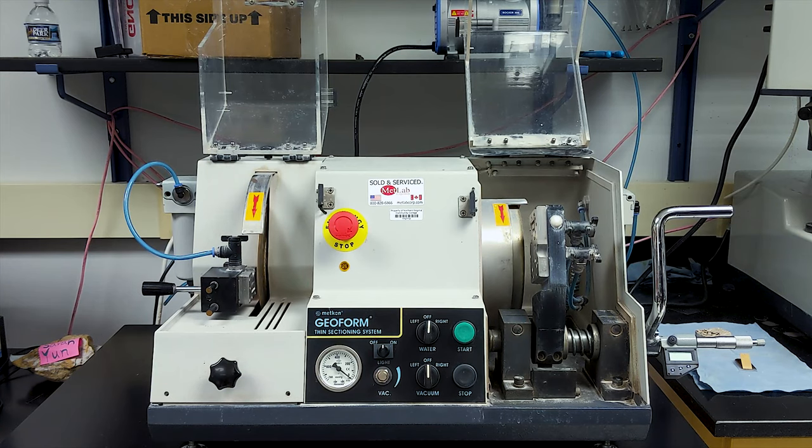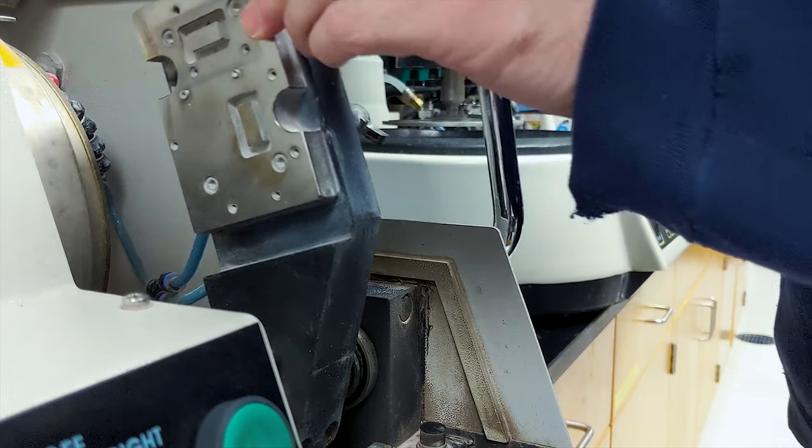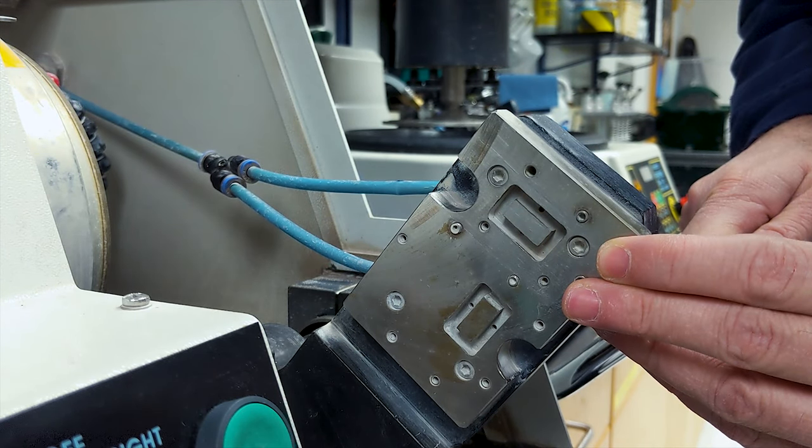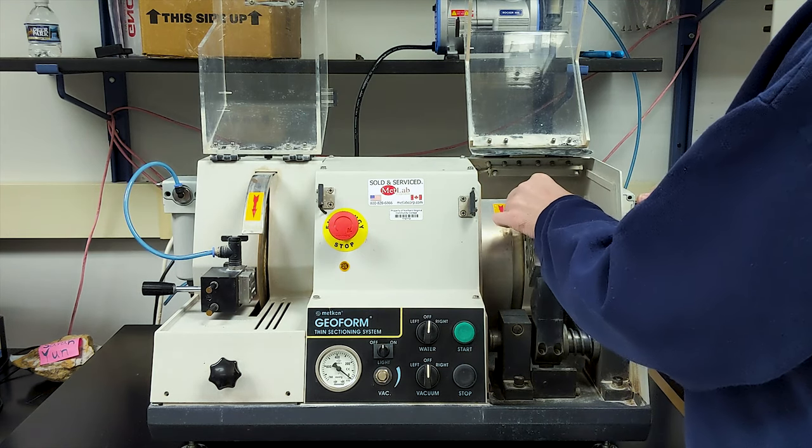On the right is the precision grinding module, where our sample slide will be fixed on a holder via the vacuum pump and carefully ground down to a thickness at or near the appropriate thickness for your thin section.